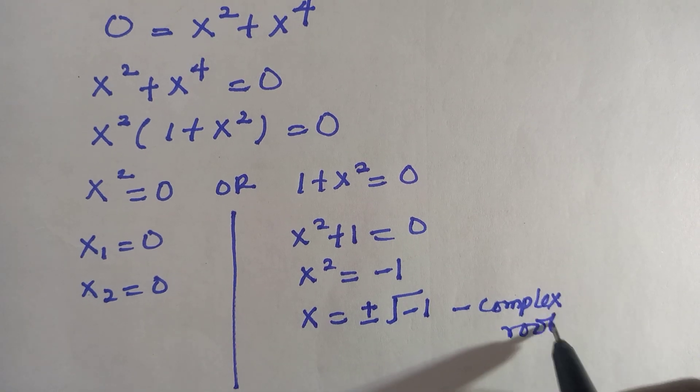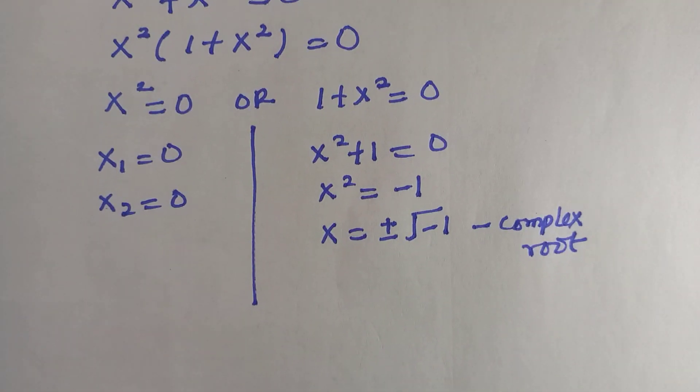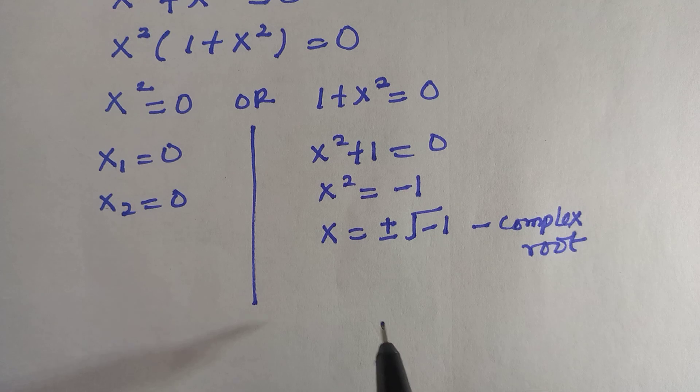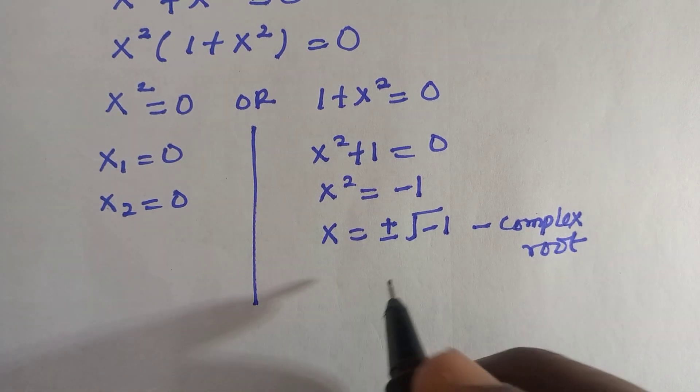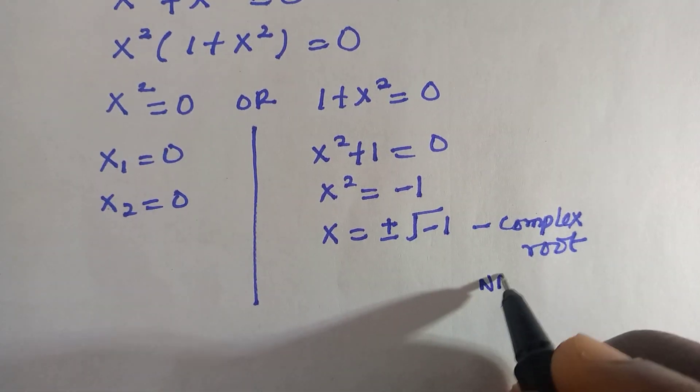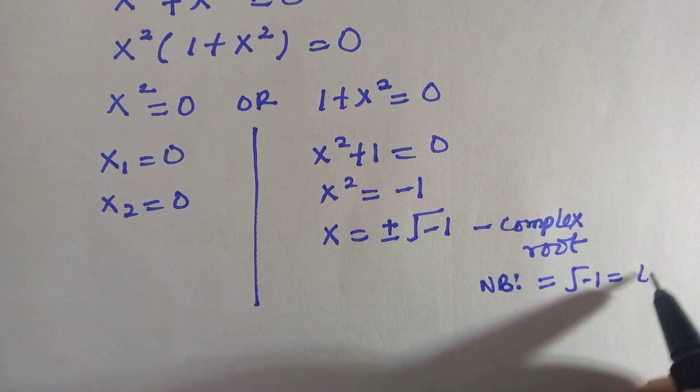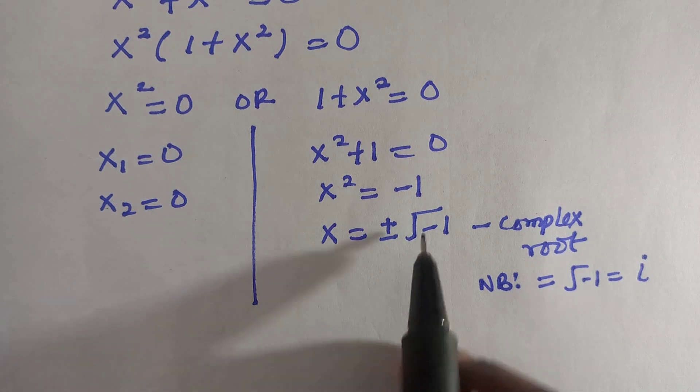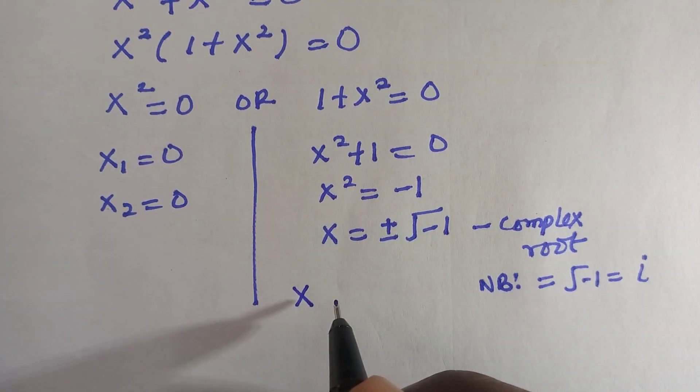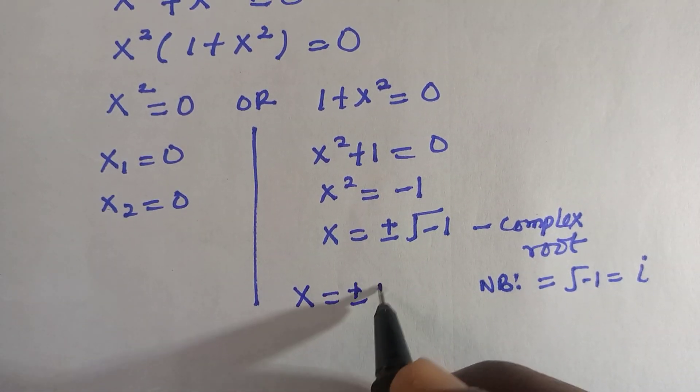If this is a complex root, the root of minus 1 is i, alright? So anywhere you see this, the root of minus 1 is i, and by using it here, we have x equals to plus or minus i.